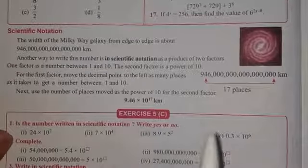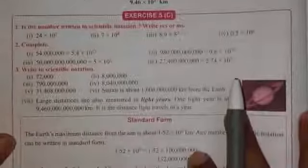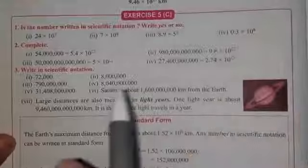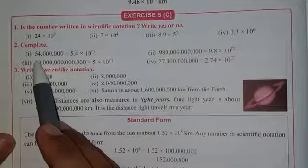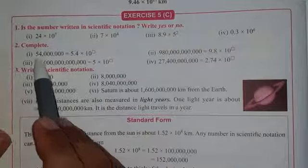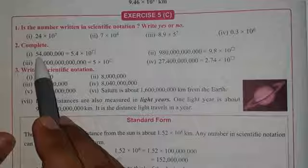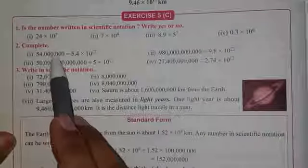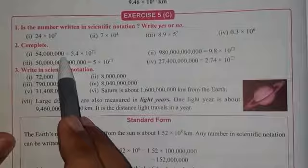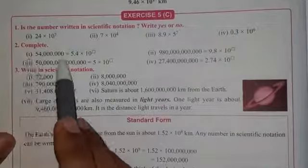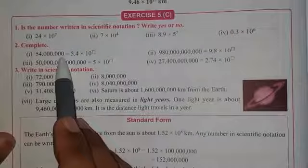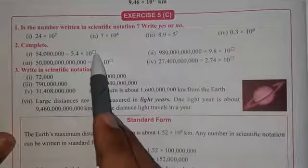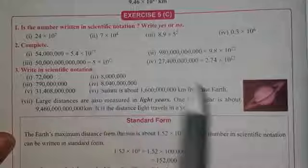As this number is given, let me tell you one more thing. This is given to complete. Now after 5, when you place the point, you are having 1, 2, 3, 4, 5, 6, 7 places after the decimal. So we will write here 10 to the power 7.